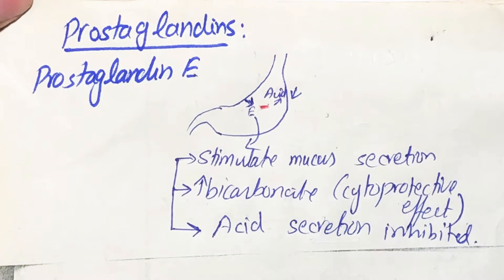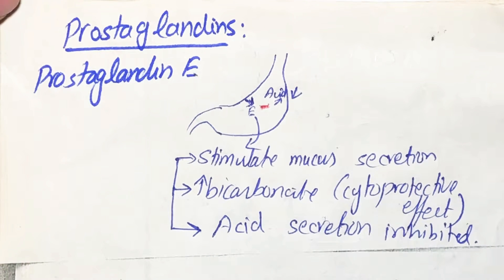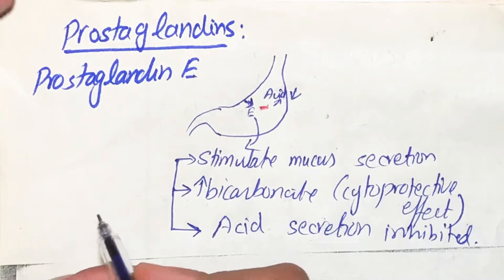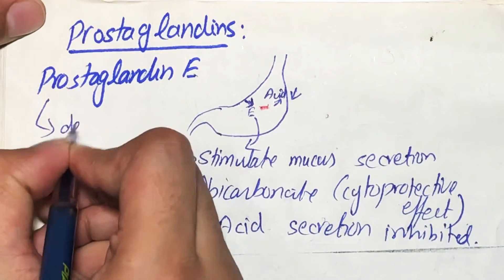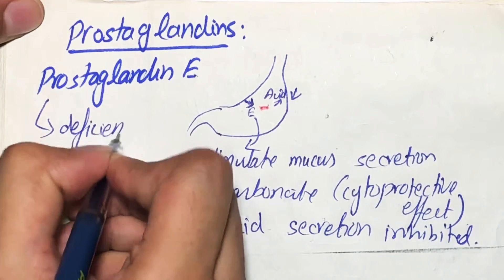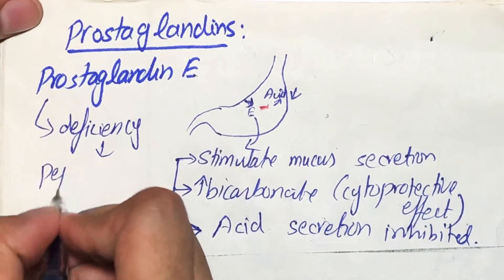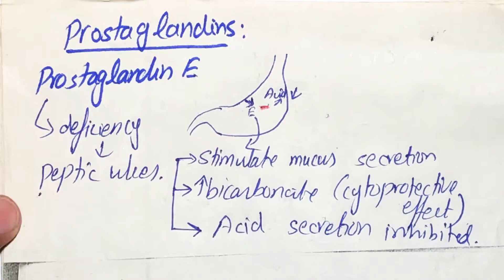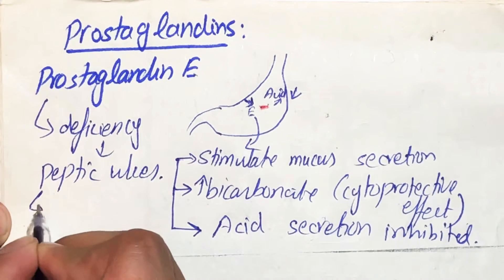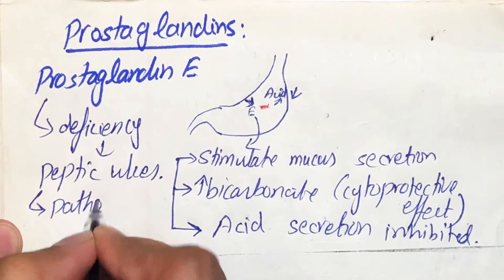In this way, all of these things will be reversed and it will not facilitate our stomach in any way — it will cause damage to the stomach lining, causing peptic ulcer. That is why prostaglandins are involved in the pathogenesis of peptic ulcer.